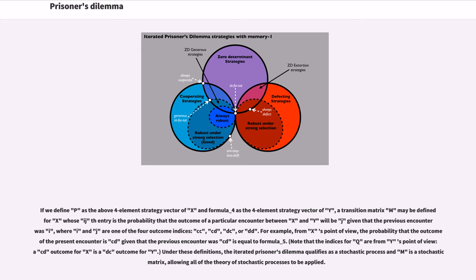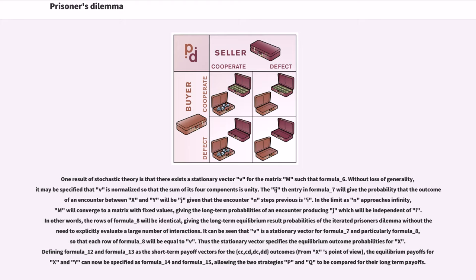If we define P as the four-element strategy vector of X and Q as the four-element strategy vector of Y, a transition matrix M may be defined for X whose (i,j)th entry is the probability that the outcome of a particular encounter between X and Y will be j given that the previous encounter was i, where i and j are one of the four outcome indices: CC, CD, DC, or DD. Under these definitions, the iterated prisoner's dilemma qualifies as a stochastic process and M is a stochastic matrix, allowing all of the theory of stochastic processes to be applied. One result of stochastic theory is that there exists a stationary vector V for the matrix M. Without loss of generality, V is normalized so that the sum of its four components is unity.